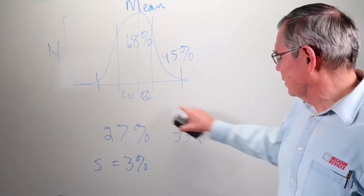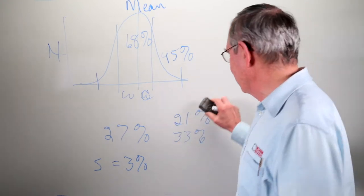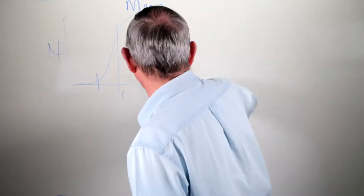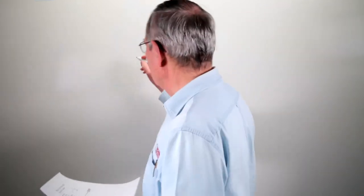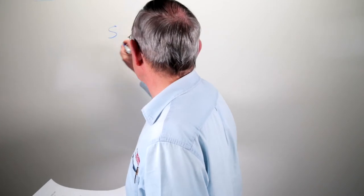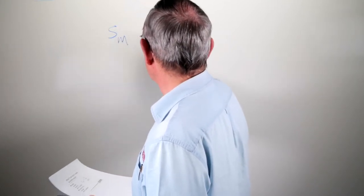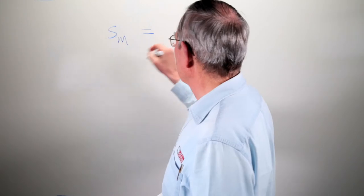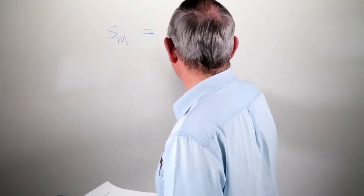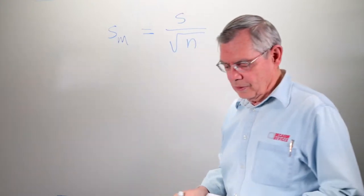Now we may say, well, that's not good enough. We need better values than that — so what do we do? We need to take more samples and average them. We can know what the result of averaging several samples is with a simple relationship: the standard deviation of the mean equals the standard deviation divided by the square root of the number of samples.